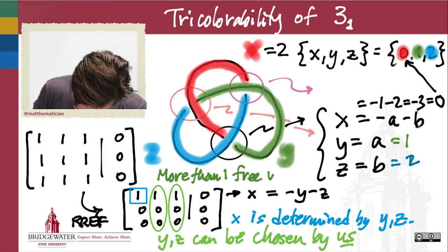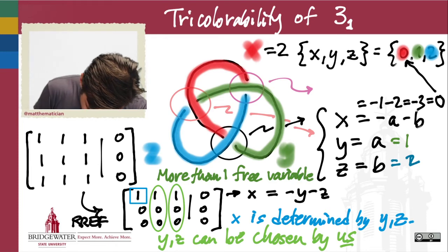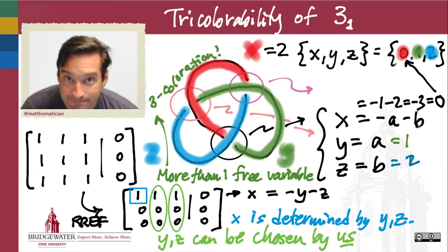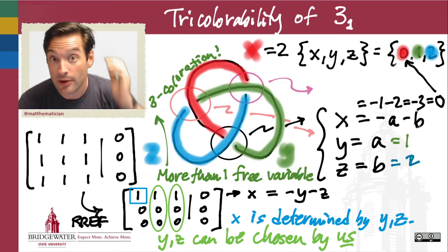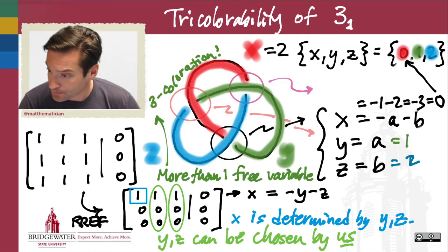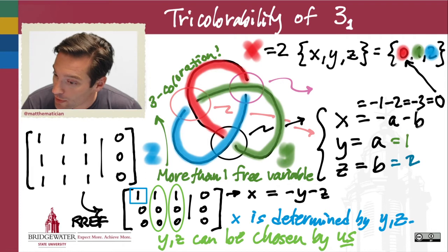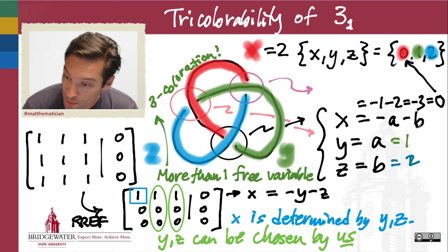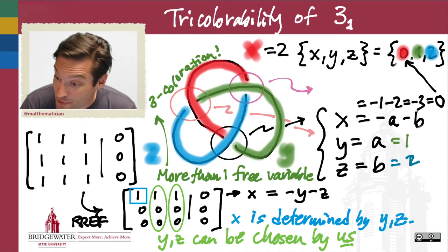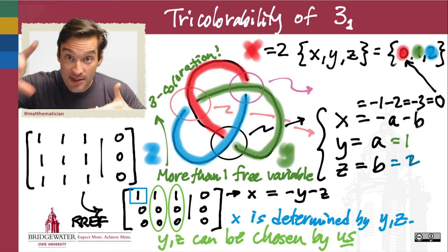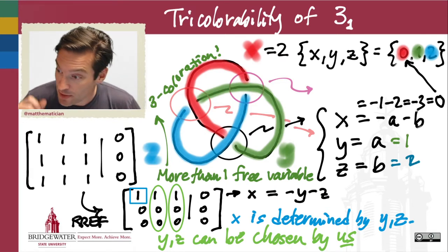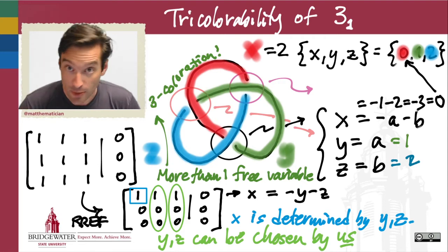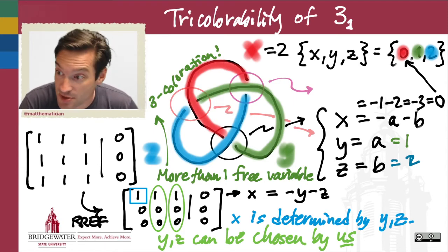More than one free variable means that a non-trivial three-coloration exists. This is a recipe we can use for any knot diagram at all. Next, take this six-crossing diagram and with your group, assign six letters to the arcs, then come up with the six-by-six system of linear equations to determine whether or not this six-crossing knot is tricolorable. Take about 10 or 15 minutes, then we'll come back together and solve that system using technology.